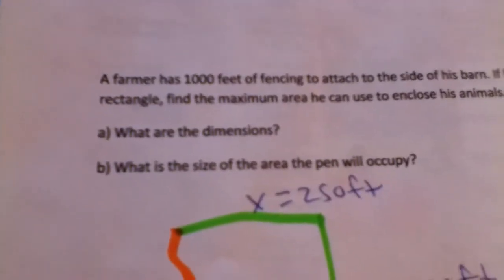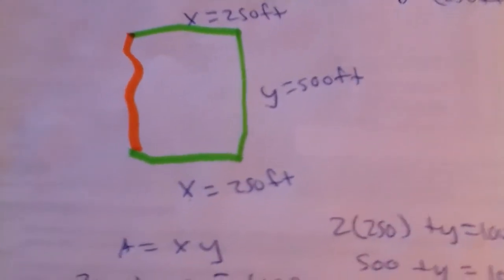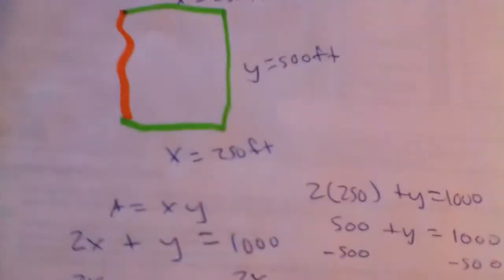That was simple. Now, B is asking what is the size of the area the pen will occupy. That's basically 250 times 500.